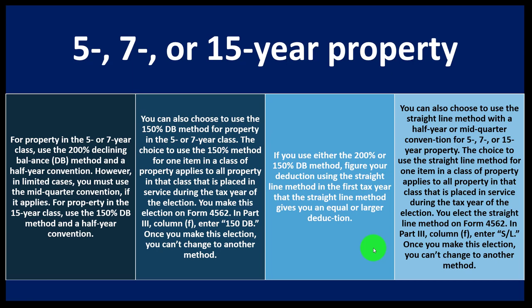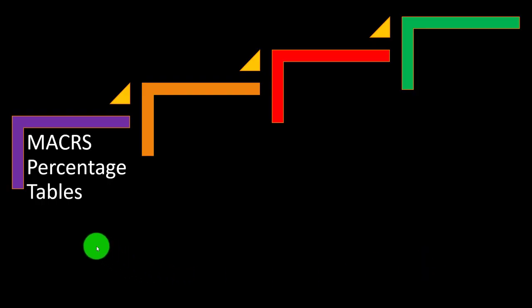You can also choose to use the straight-line method with a half-year or mid-quarter convention for five-, seven-, or 15-year property. The choice applies to all property in that class placed in service during the tax year of the election. You wouldn't typically want to use straight-line for tax purposes because that gives less depreciation up front — though it may more closely mirror book basis accounting. You elect the straight-line method on Form 4562, Part Three, Column F, entering SL. Once you make this election, you can't change to another method.